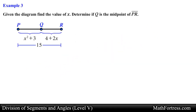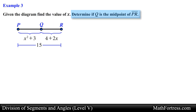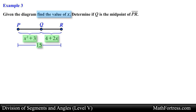Alright, let's end the video with a final example. Given the diagram, find the value of x and determine if point Q is the midpoint of segment PR. In this problem we are provided with a diagram of a line segment broken into two smaller line segments. We are given the measurement of segment PR and algebraic expressions representing the two smaller segments. We are asked to determine if point Q is the midpoint of segment PR. Notice that points P, Q, and R are collinear, which allows us to set up a geometric relation.